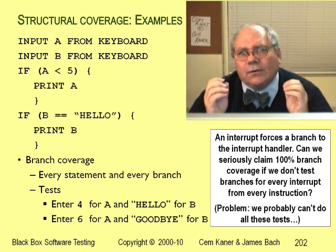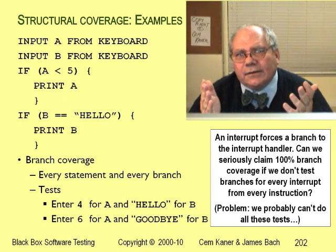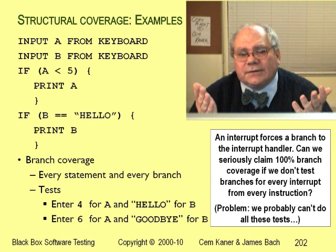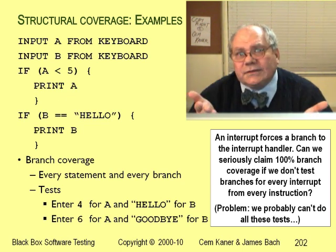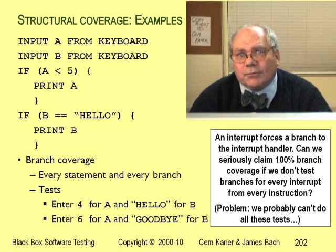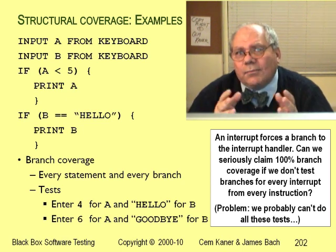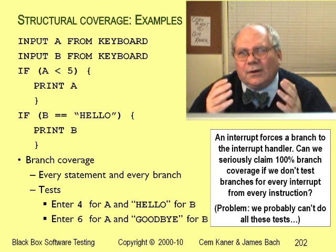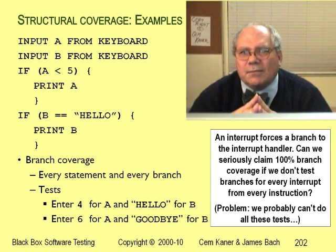So interrupts are branches. We can try to rationalize not counting them as branches by recognizing they're hard to test, you can't see them in the code, and the programmer didn't intentionally write them as branches — it's the operating system that makes them branch. Okay, fine. We can say these aren't the branches we have in mind when we talk about branch coverage. But don't call branch coverage complete coverage at that point. If there's a path you can take that's going to cause failures, you can't call it coverage if you're not going to test it.